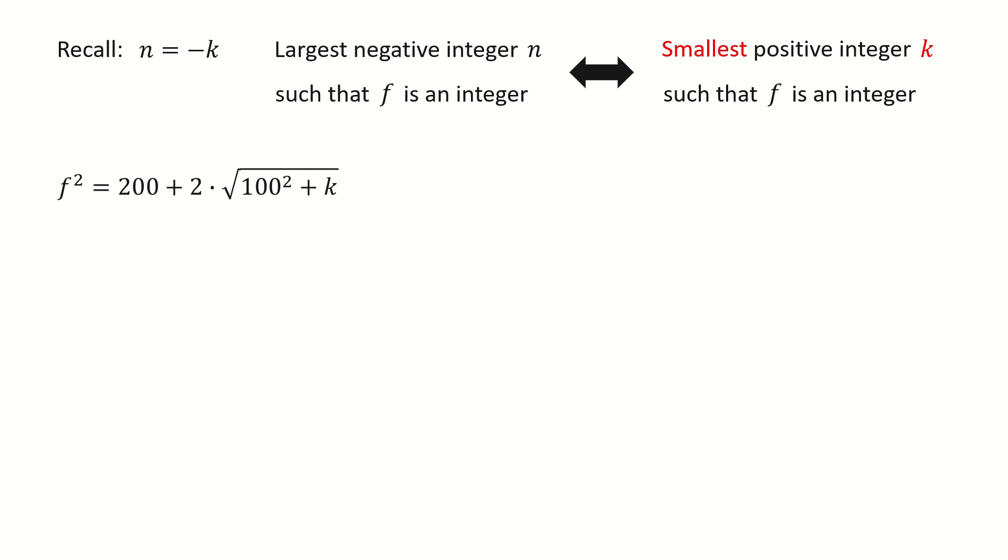I copy the result here. If k takes the smallest positive integer, that means the right-hand side will be the smallest. If the right-hand side is the smallest, that means f is the smallest. Let's estimate the lower bound for f.